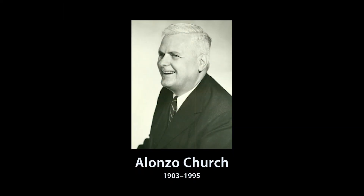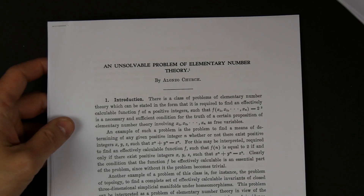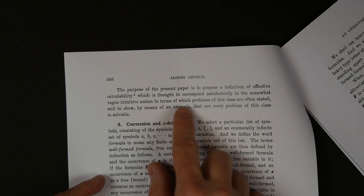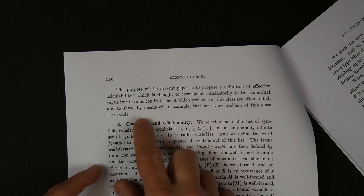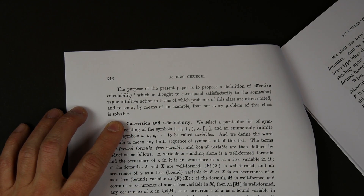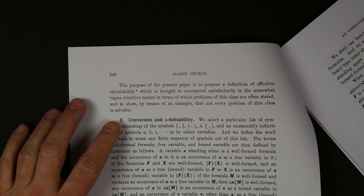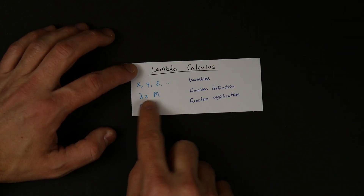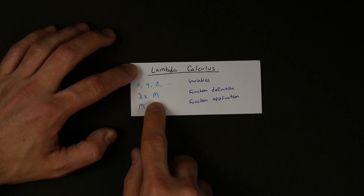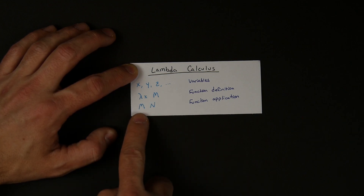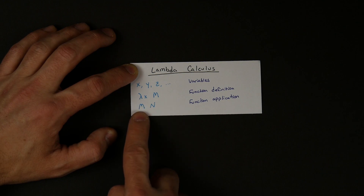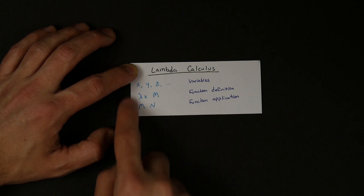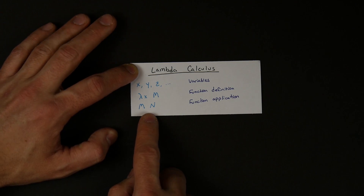At about the same time in 1936, there was this other guy, Alonzo Church, who was trying to figure out that same thing. He wrote a paper whose purpose was to propose a definition of effective calculability, thought to correspond satisfactorily to the somewhat vague intuitive notion. He came at it from a completely different direction, coming up with a whole new system of mathematics called lambda calculus, which starts with just a few rules: variables, the ability to define a function that takes a variable and returns some expression, and the ability to apply a function to a parameter.